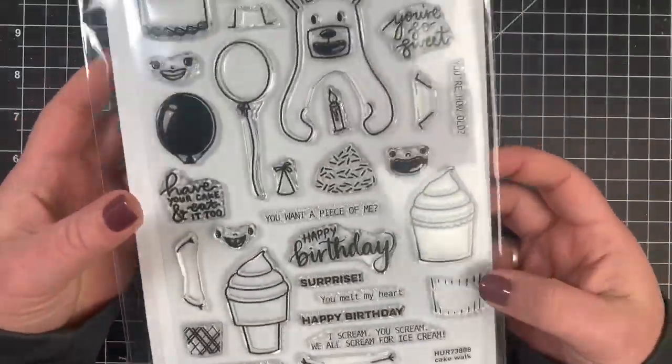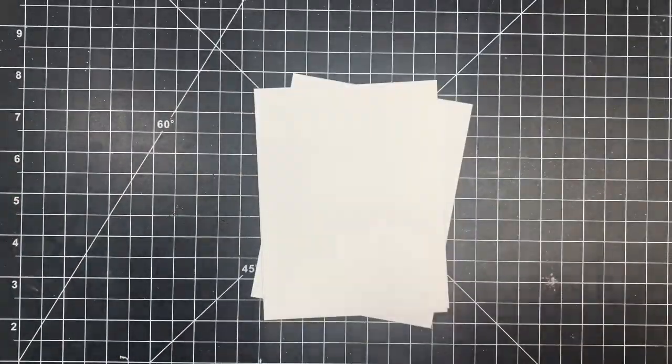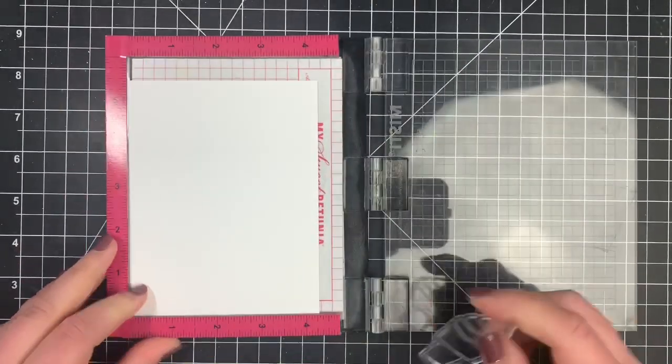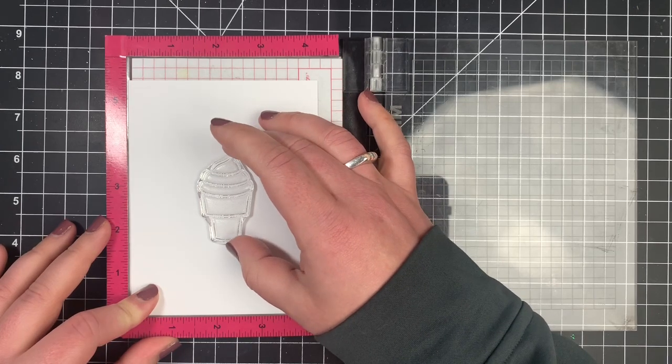Hi everybody, it's Courtney, and today I'm going to be using one of the new Simon Hurley Create stamp sets called Cake Walk. Today we're going to be making three very simple cards with just one image each.